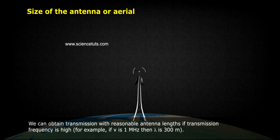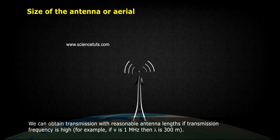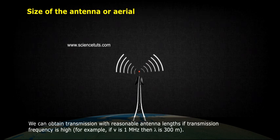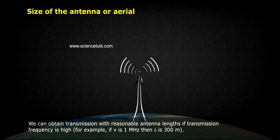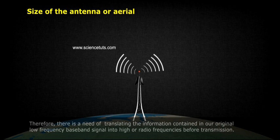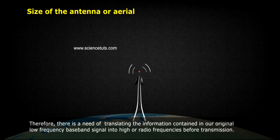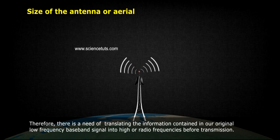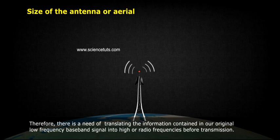We can obtain transmission with reasonable antenna lengths if transmission frequency is high. For example, if ν is 1 MHz, then λ is 300 meters. Therefore, there is a need of translating the information contained in our original low-frequency baseband signal into high or radio frequencies before transmission.